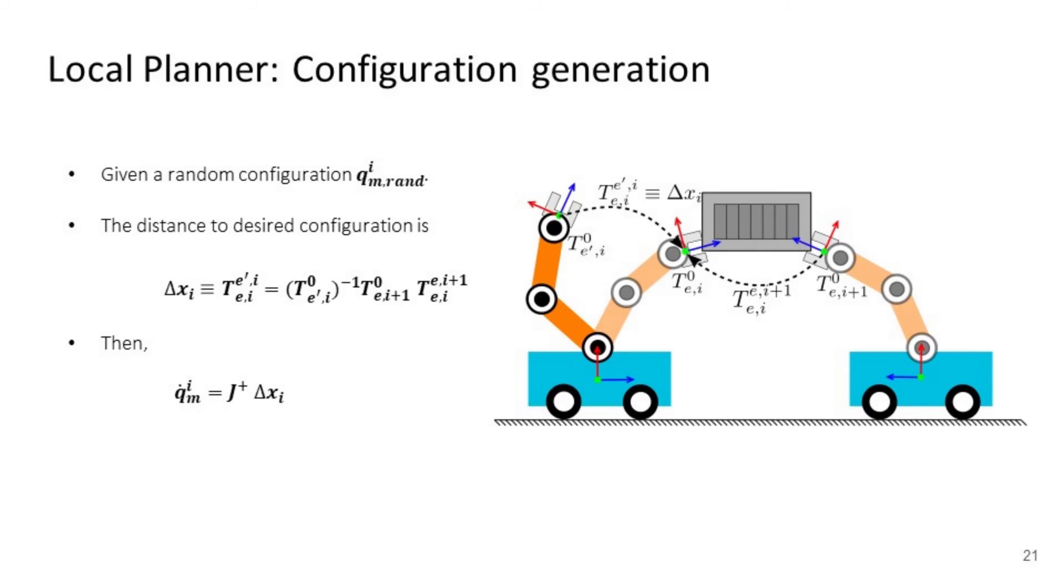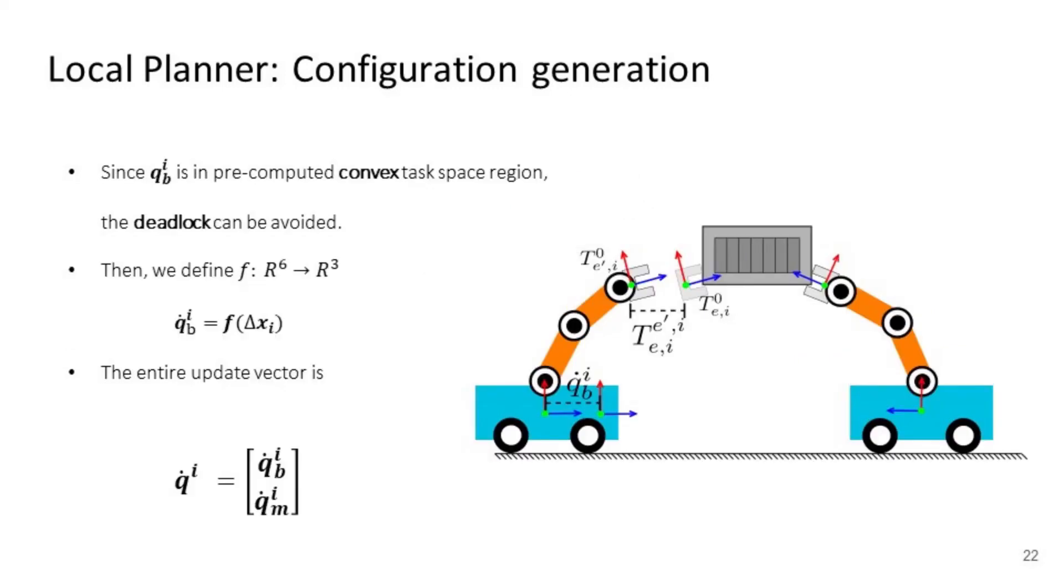First, given a random configuration of manipulator q_m, we can compute update vector q̇_m by assuming its adjacent manipulator is in the desired pose. Then, since we have a pre-computed convex task space for the mobile base, deadlock can be avoided. The update to the configuration space of the mobile base can be directly derived. Lastly, the entire update vector can be found. I would like to emphasize that we can compute the update vector in parallel for each mobile manipulator in practice.